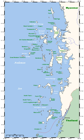Archipelagos may be found isolated in large amounts of water or neighbouring a large land mass. For example, Scotland has more than 700 islands surrounding its mainland which form an archipelago. Archipelagos are often volcanic, forming along island arcs generated by subduction zones or hotspots, but may also be the result of erosion, deposition, and land elevation.